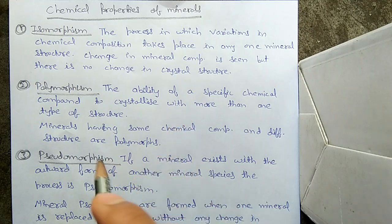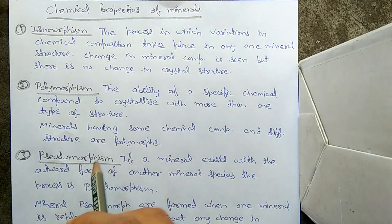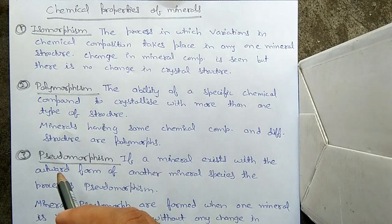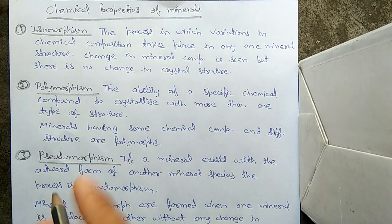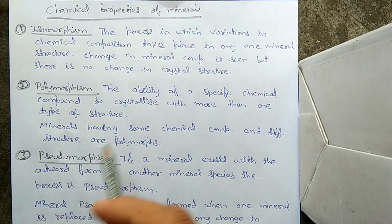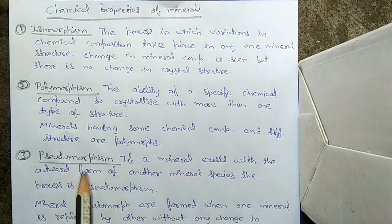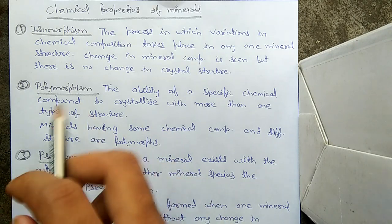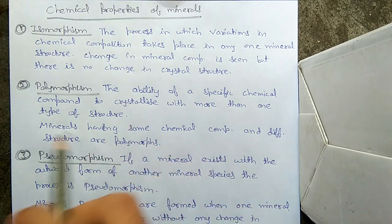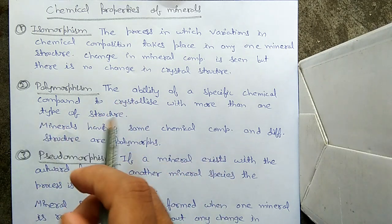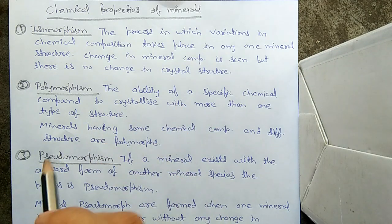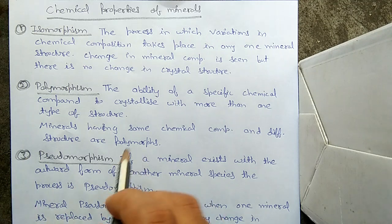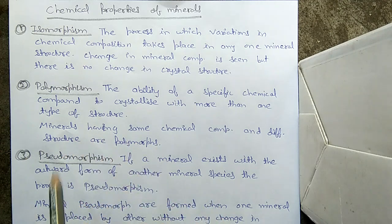The second one is polymorphism. What is polymorphism? It is the ability of a specific chemical compound to crystallize with more than one type of structure. If a mineral crystallizes in a cubic form as well as some other crystal structure, that is called polymorphism. Minerals having the same composition but different crystal structure are called polymorphs, and this process is called polymorphism.